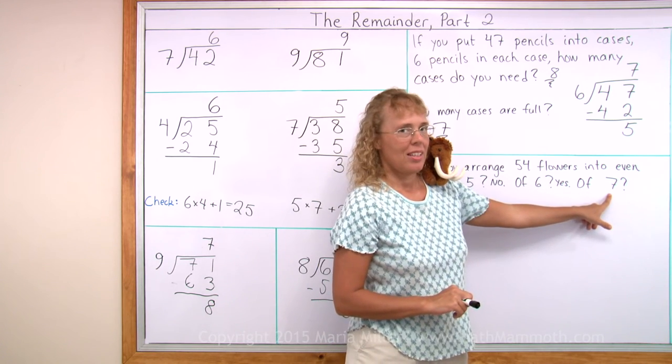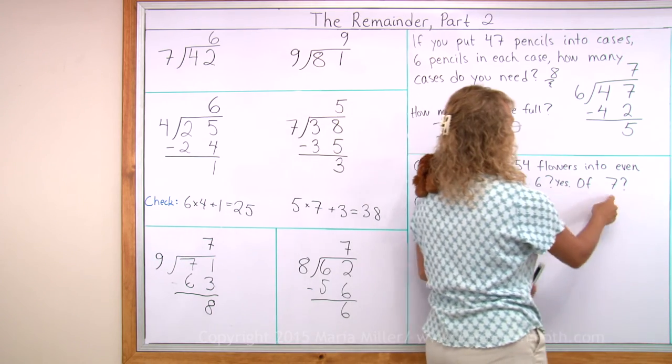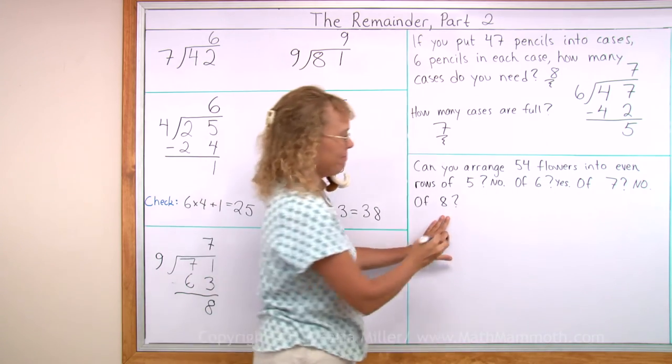Now how about 7? Even rows of 7? No, because 54 is not in the table of 7. Even rows of 8? Neither.